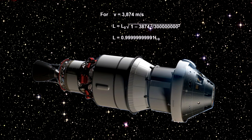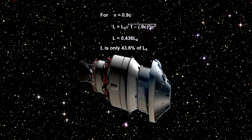If we were traveling at the same speed as GPS satellites, it would look like this. If it were traveling at 0.9 times the speed of light, it would look like this.